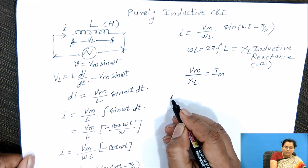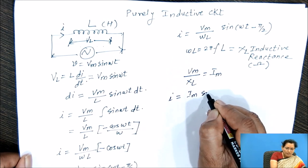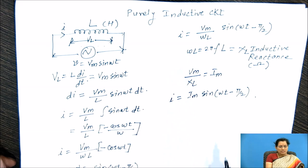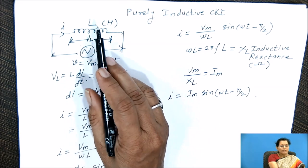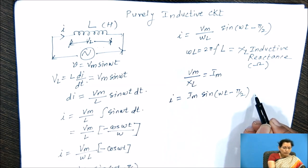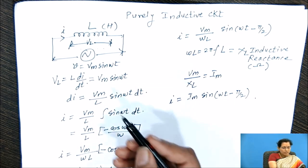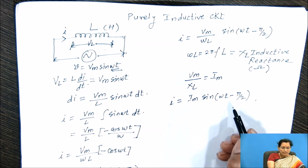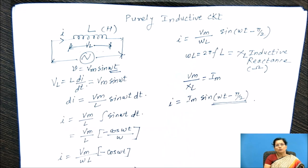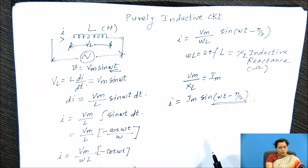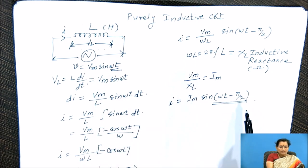Then if we put that here, we will get the current equation as I equal to Im sin(ωt − π/2). This is the current equation for this purely inductive circuit. Now we have to compare the current equation and the voltage equation, where in the voltage equation the angle is ωt and in the current equation the angle is ωt − π/2. So minus π/2 is the phase difference for this voltage and current, and here we can say that current is lagging to this voltage by 90 degrees.